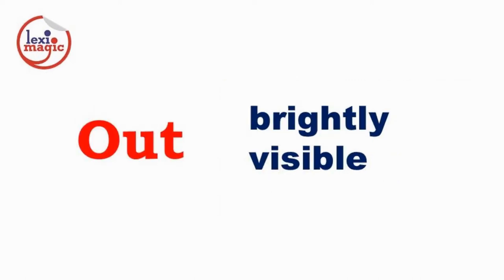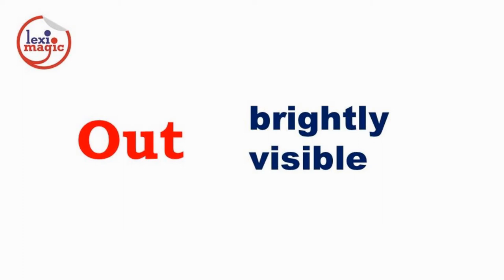Out in the first sense means to be brightly visible. For example, the moon is out in the night sky. Out in the second sense is to become dark. For example, the lights went out and we were trapped in the dark cave.